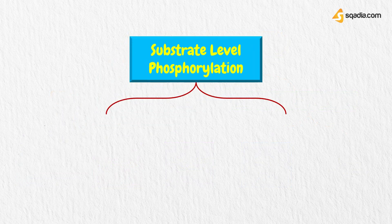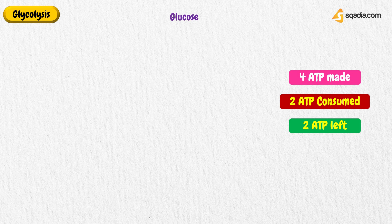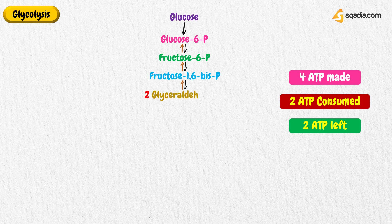Substrate-level phosphorylation in glycolysis produces ATP. The total number of ATP produced in glycolysis is four from one glucose molecule. Two molecules of ATP are utilized in the first half of glycolysis, so there is a net gain of two ATP molecules. The ten steps of glycolysis can be divided into two phases. The preparatory phase consists of five steps and starts with the conversion of glucose to fructose 1,6-bisphosphate (F1,6-BP) through three enzymatic reactions — a phosphorylation at C1, an isomerization, and a second phosphorylation at C6 — with consumption of 2 ATP.